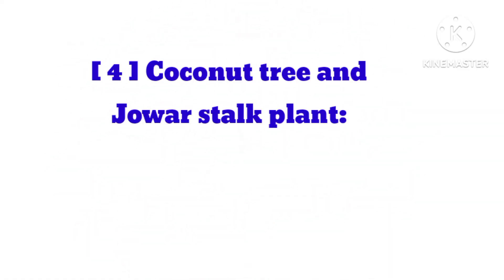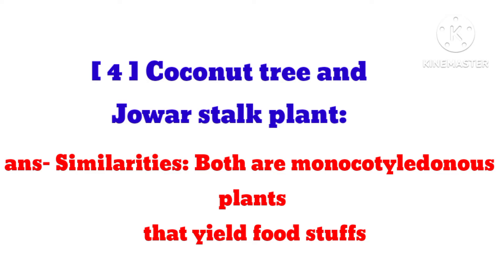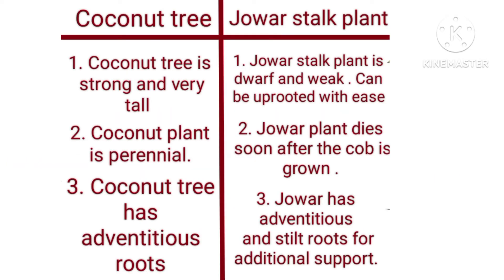Coconut tree and Jawar stock plant — Similarities: Both are monocotyledonous plants that yield foodstuffs. Differences: 1. Coconut tree is strong and very tall; Jawar stock plant is dwarf and weak and can be uprooted with ease. 2. Coconut plant is perennial; Jawar plant dies soon after the cob is grown. 3. Coconut tree has adventitious roots; Jawar has adventitious roots and stilt roots for additional support.